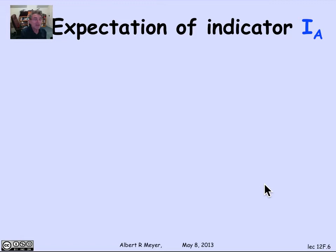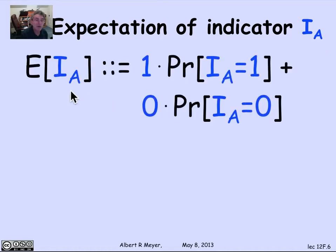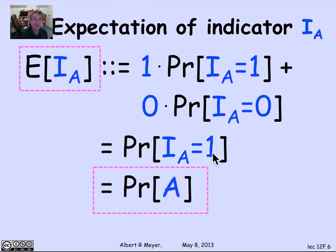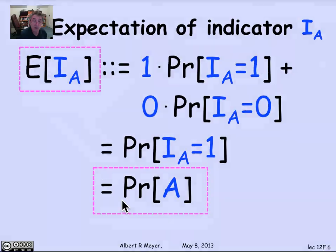Let's make use of it. And to do that, let's make a trivial but very important remark about the expectation of an indicator variable. The indicator i_A equals 1 if event A occurs and 0 otherwise. So the expectation of the indicator variable is 1 times the probability it equals 1, plus 0 times the probability it equals 0. The second term vanishes, and the probability that i_A equals 1 is exactly the probability of A. So the expectation of the indicator variable for event A is simply the probability that A occurs. File that away — we're about to use it multiple times.